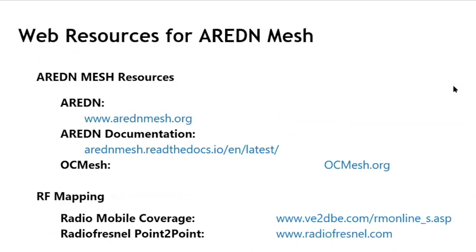Here are a couple of resources. ardenmesh.org has a fantastic forum — people are super happy to help and you can search it easily. Unlike many other amateur radio endeavors, they actually have very good documentation at ardenmesh.readthedocs.io. OCMesh is a great website to understand what's going on in the mesh world. For RF mapping, Radio Mobile Coverage online and Radio Fresnel point-to-point are great tools to figure out whether two sites can connect before you brave the elements.